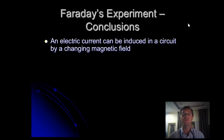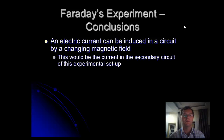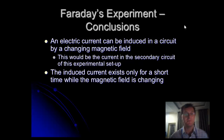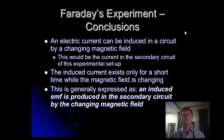An electric current can be induced in a circuit by changing a magnetic field. He recognised he was creating an electromagnet, and that only by changing that magnetic field could he create a current in another circuit — the secondary circuit of this experimental setup. The induced current only exists for a short time while the magnetic field is changing; it just flickers at the beginning. This is generally expressed as an induced EMF — an electromotive force — produced in the secondary circuit by changing the magnetic field. This was Faraday's first experimental findings, to be refined later into Faraday's law.